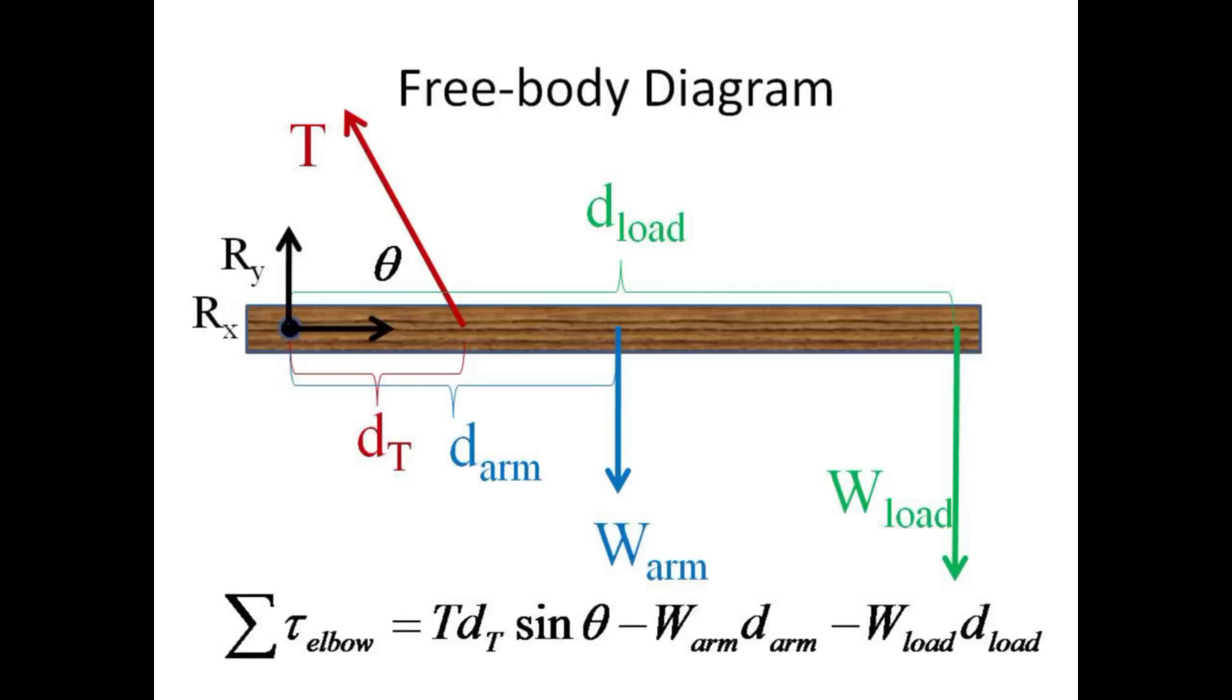Summing all the torques about the elbow gives T times D sub T times the sine of theta minus w arm d arm minus w load d load, and these should sum to zero.